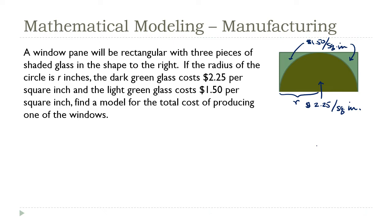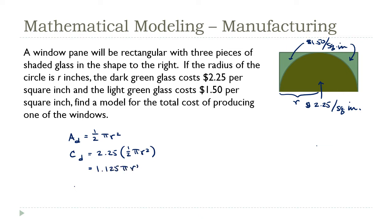For the dark section, let's call it A_d. That dark section is a semicircle, where the area of a semicircle is (1/2)πr². So the cost of this section is 2.25 × (1/2)πr², which simplifies to 1.125πr².